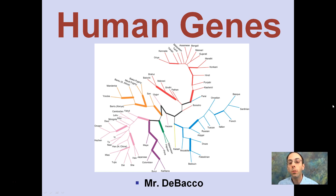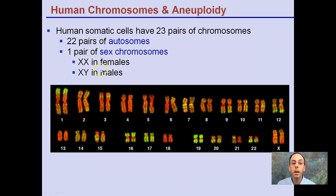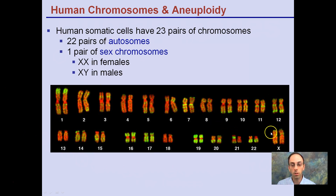Here we're going to look at a brief overview of human genes, how they interrelate, and some things that can sadly go wrong and what effects we may see from that. Human chromosomes: the somatic cells have 23 pairs of chromosomes — 22 pairs are autosomes and one pair is sex chromosomes. Two X's is female and an X and a Y is male. Here we have our 22 pairs of autosomes and one sex pair of chromosomes, both being X, indicating this is from a female.